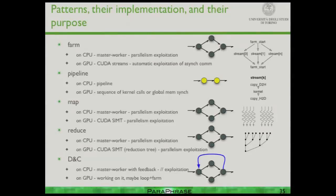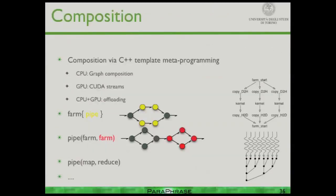Examples of patterns include farm, pipeline, map, reduce, divide-and-conquer, and so forth. For each of them we found a way of describing them either as graphs or in terms of CUDA primitives — for example, farm and pipeline can be expressed using CUDA streams, and map and reduce can be expressed using CUDA native threads. Everything can be freely nested: a farm of pipelines, a pipeline of farms, a pipeline of map-reduce, and so on.